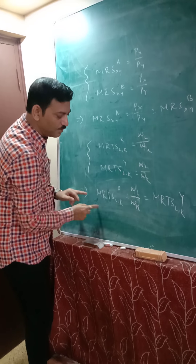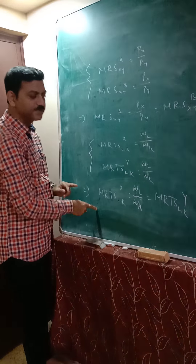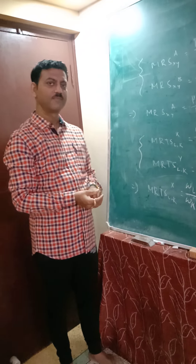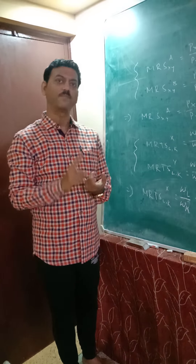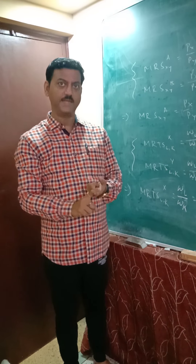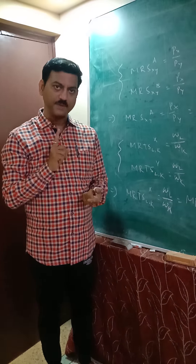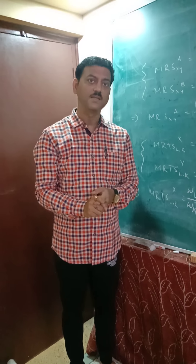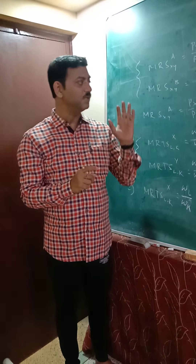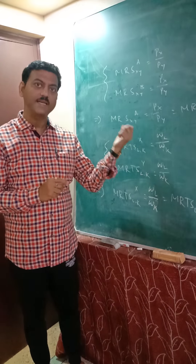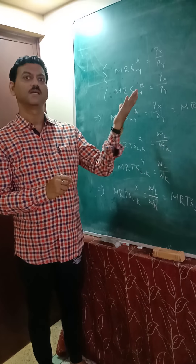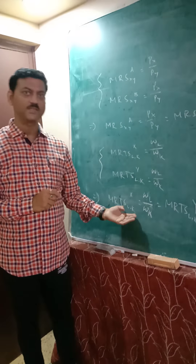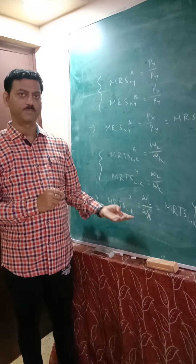So whenever we have a perfectly competitive market, for which product price is fixed and factor price is fixed, we get the automatic attainment of the exchange optimality condition and the production of commodity optimality condition.